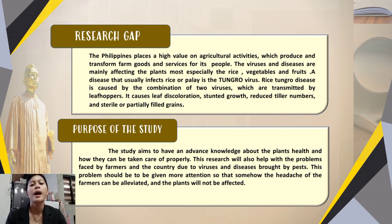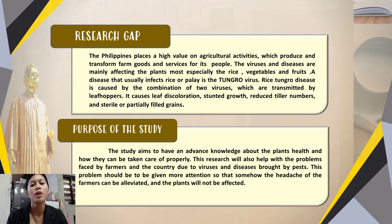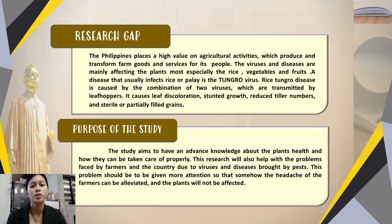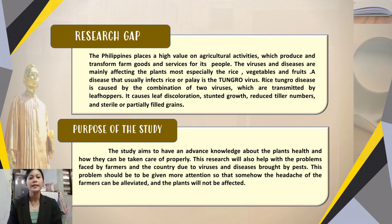A disease that usually infects rice or 'pala' is the tumuro virus. Rice tumuro disease is caused by the combination of two viruses which are transmitted by leaf hoppers. It causes leaf discoloration, stunted growth, reduced tiller numbers, and sterile or partially filled grains.